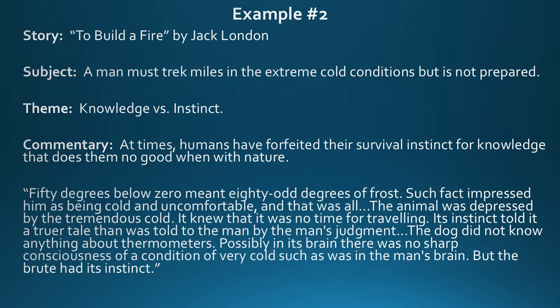The quote I found to reinforce this is: 'Fifty degrees below zero meant 80-odd degrees of frost. Such fact impressed him as being cold and uncomfortable, and that was all. The animal was depressed by the tremendous cold. It knew that it was no time for traveling. Its instincts told it a truer tale than was told to the man by the man's judgment. The dog did not know anything about thermometers. Possibly in its brain there was no sharp consciousness of a condition of very cold such as was in the man's brain. But the brute had its instinct.' Here we have the idea that the man has knowledge of what cold is like, but he doesn't understand on an instinctual level — and that is going to create a whole range of challenges. This is London's theme: what we know versus what is our instinct.